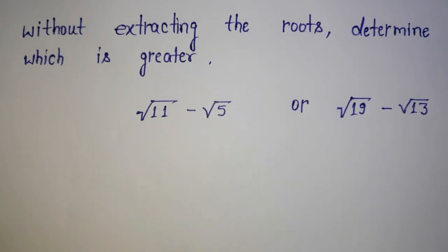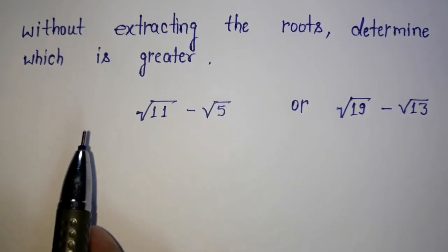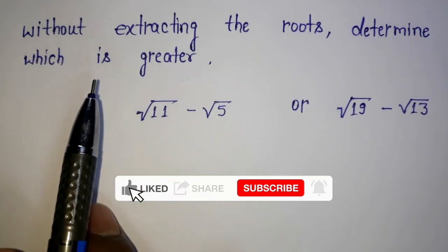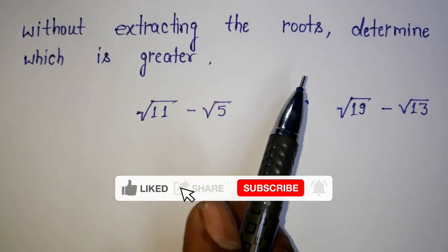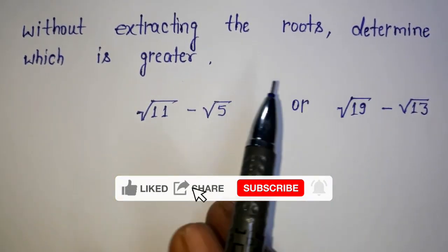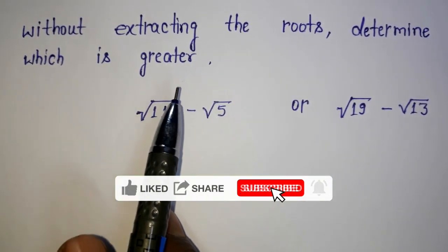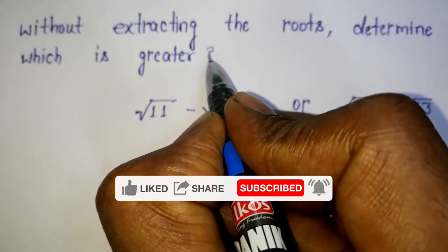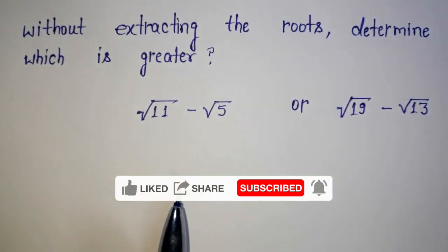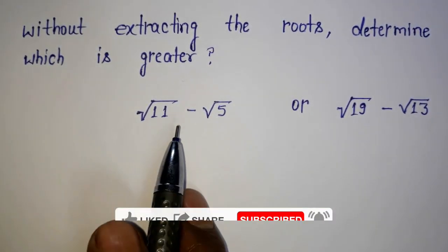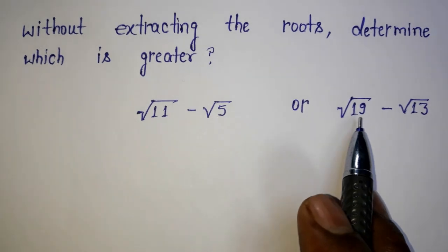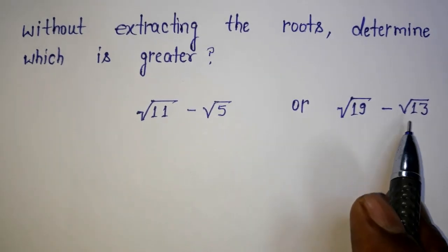Welcome back to Triple X Learnings. Today we have this awesome question: without extracting the roots, determine which is greater — root 11 minus root 5, or root 19 minus root 13. Which one is larger?